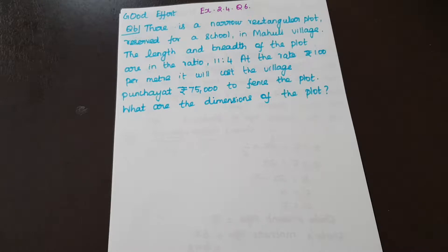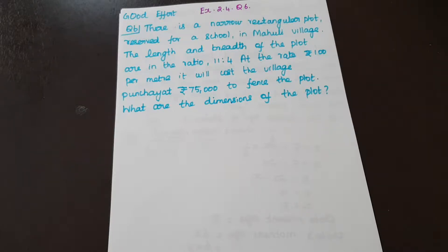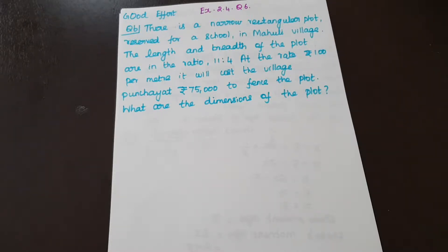There is a narrow rectangular plot reserved for a school in Muhuli village. The length and breadth of the plot are in the ratio 11 is to 4. At the rate of rupees 100 per meter, it will cost the village panchayat rupees 75,000 to fence the plot. What are the dimensions of the plot?